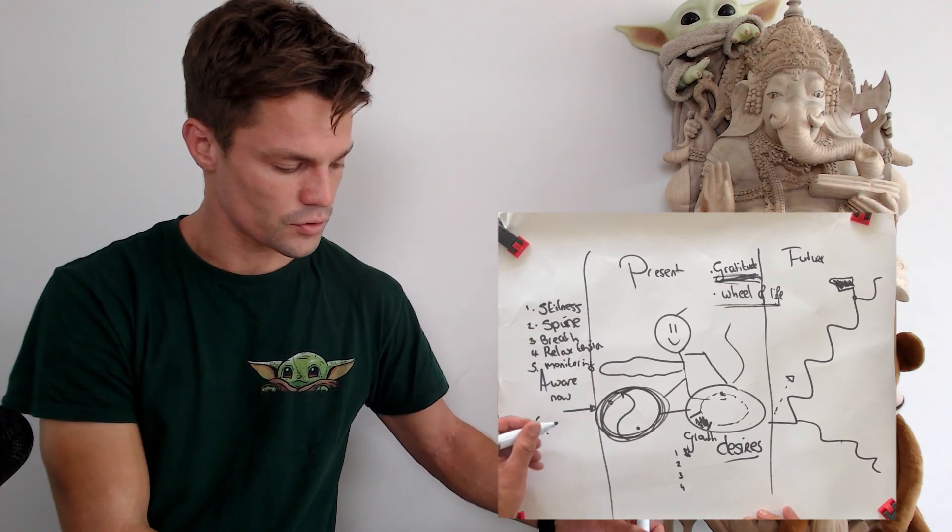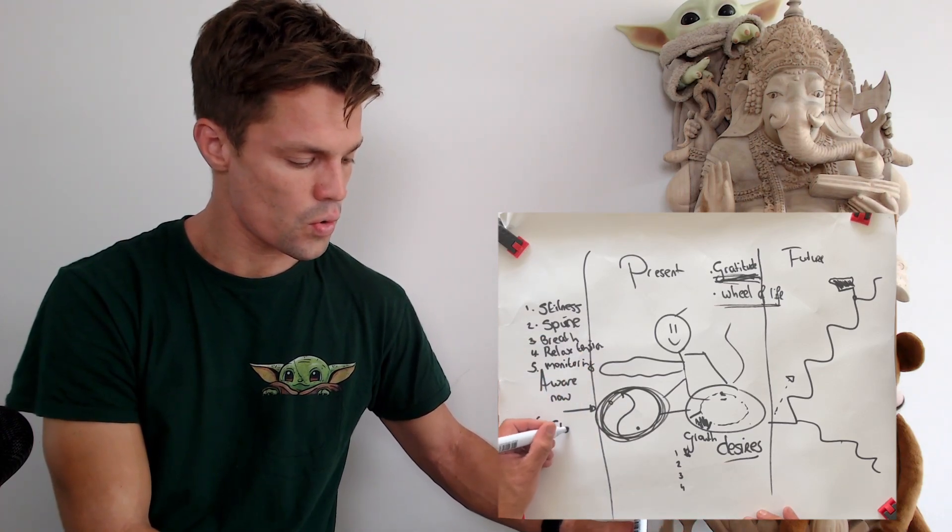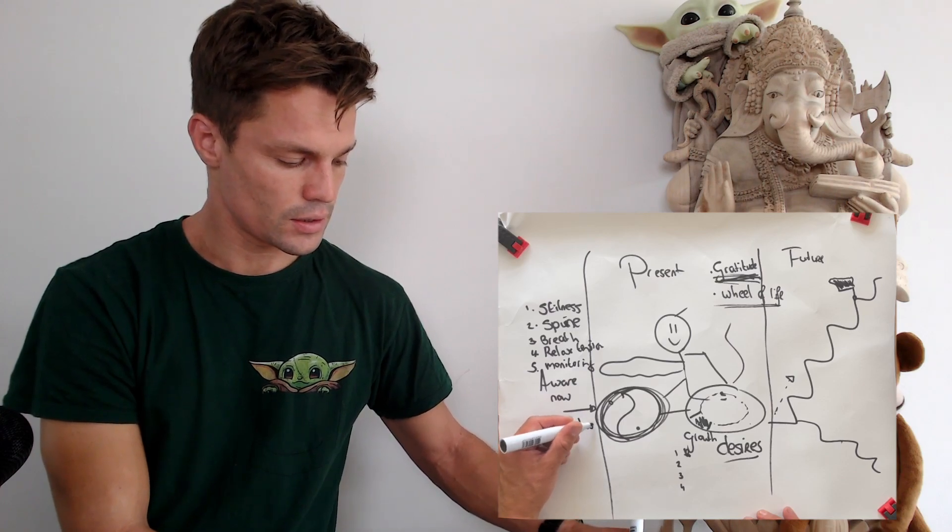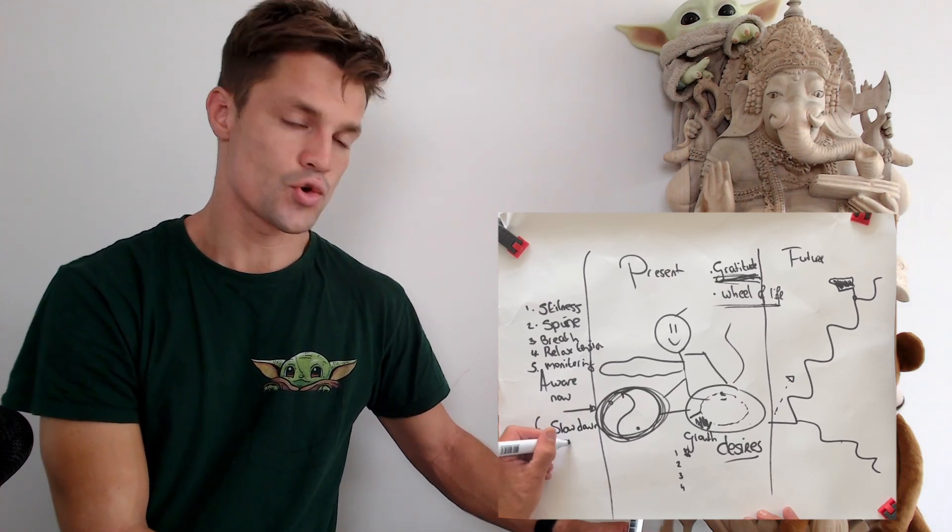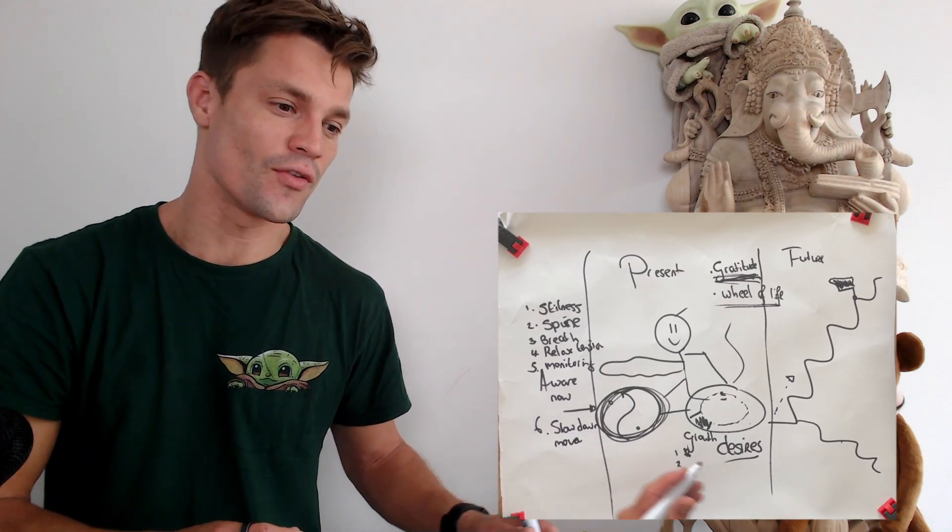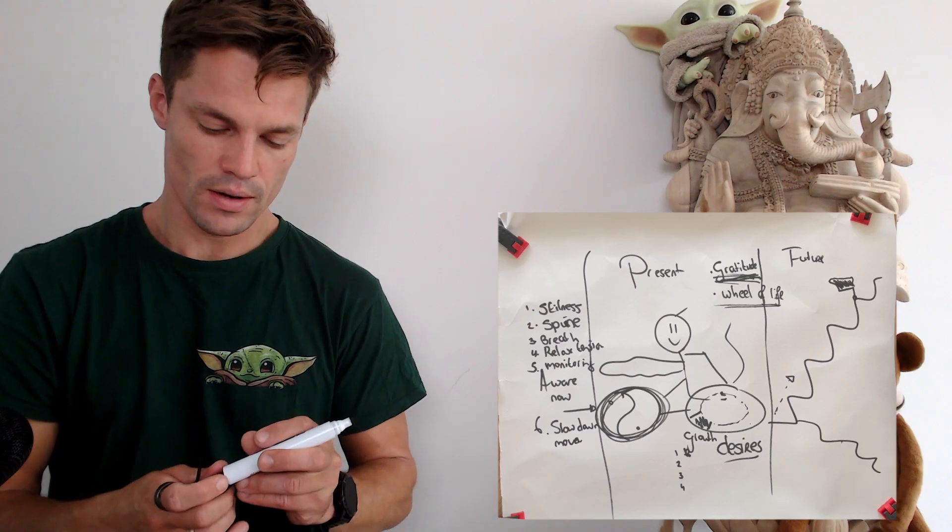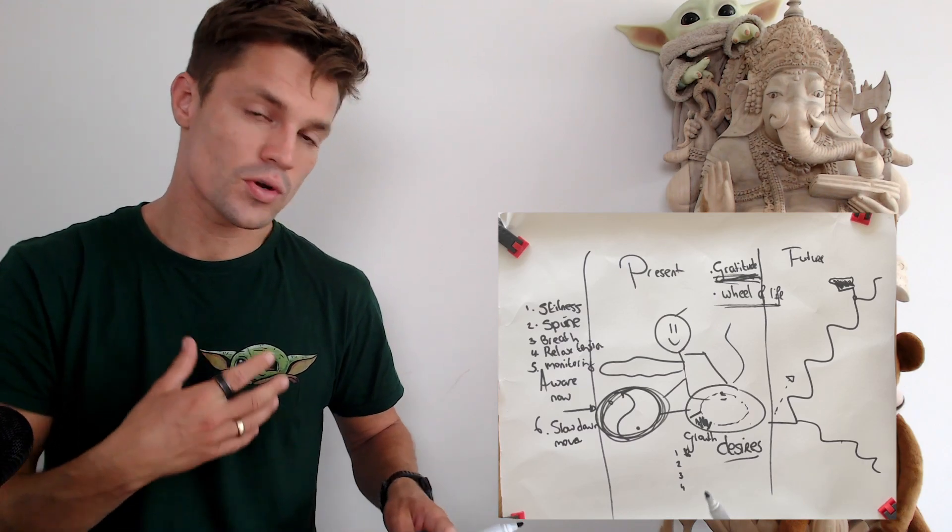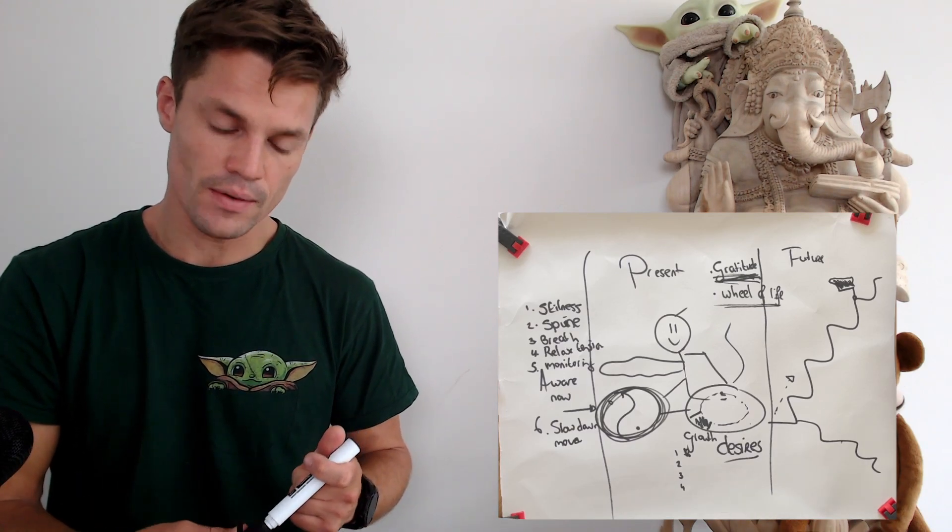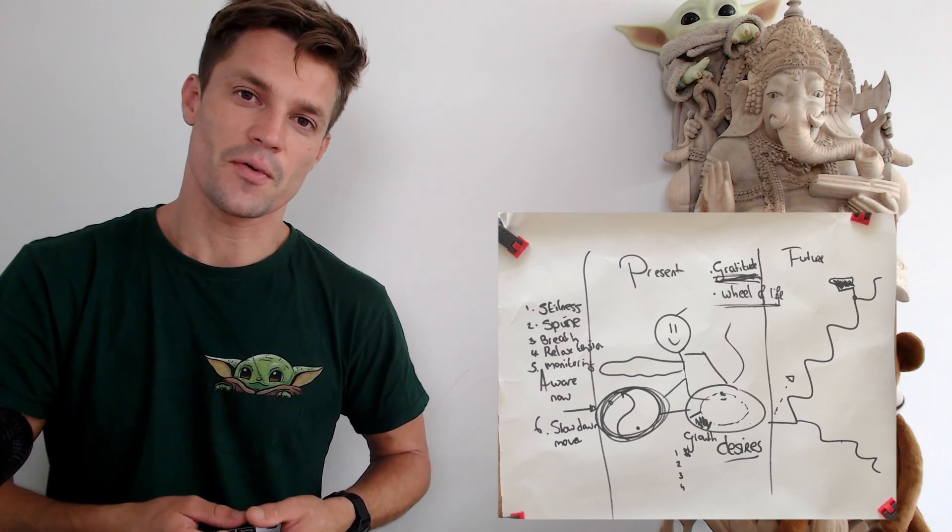Then start monitoring thoughts. What also helps is a super hack: slow down your movements. It will help you become way more aware. When I talk slowly, this also makes me more aware in this camera and of this entire weird situation.